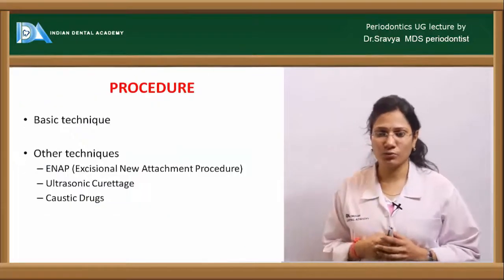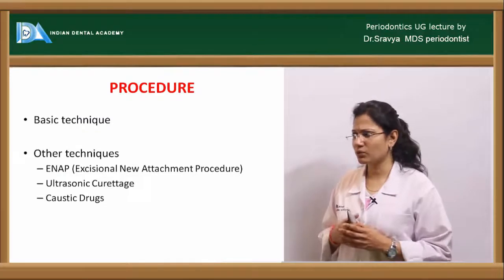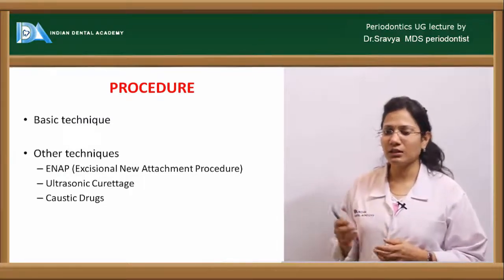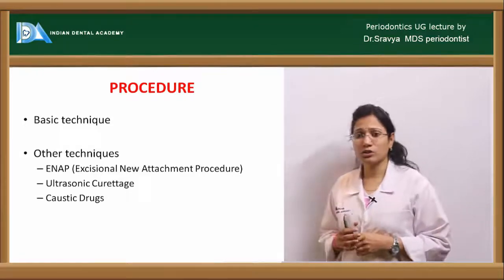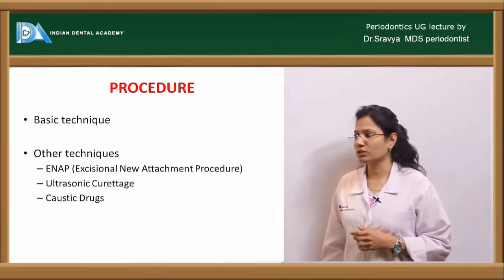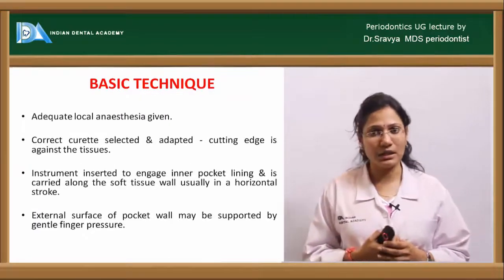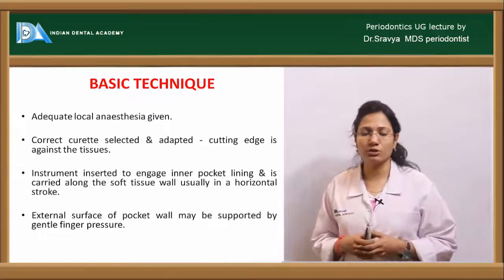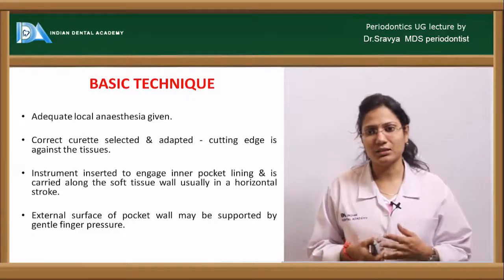The basic technique begins by infiltrating local anesthesia and selecting the proper curette — for example, Gracey curettes, which are available in different sizes and are area-specific. For anterior curettage, you can pick number 1-2 or number 3-4 curettes.